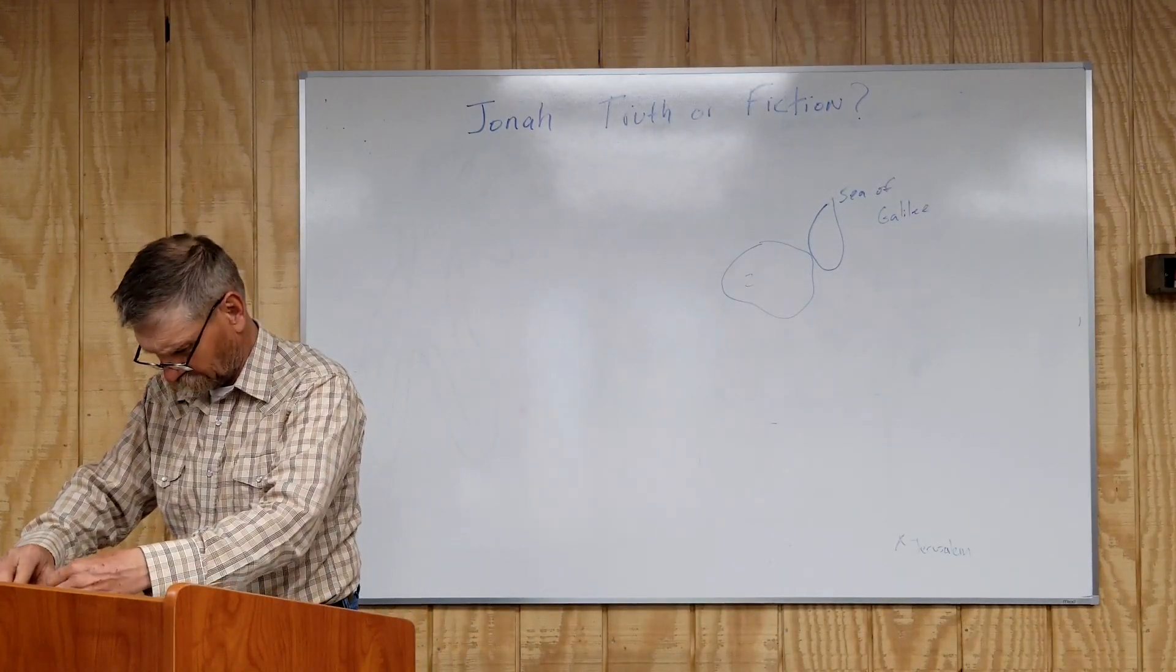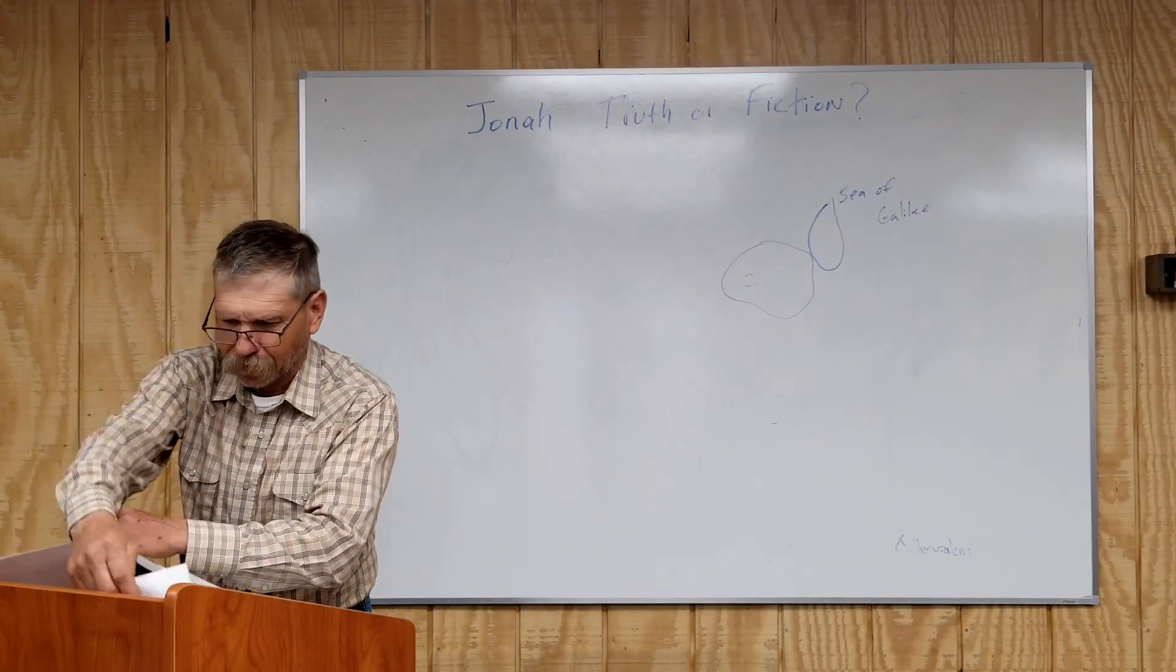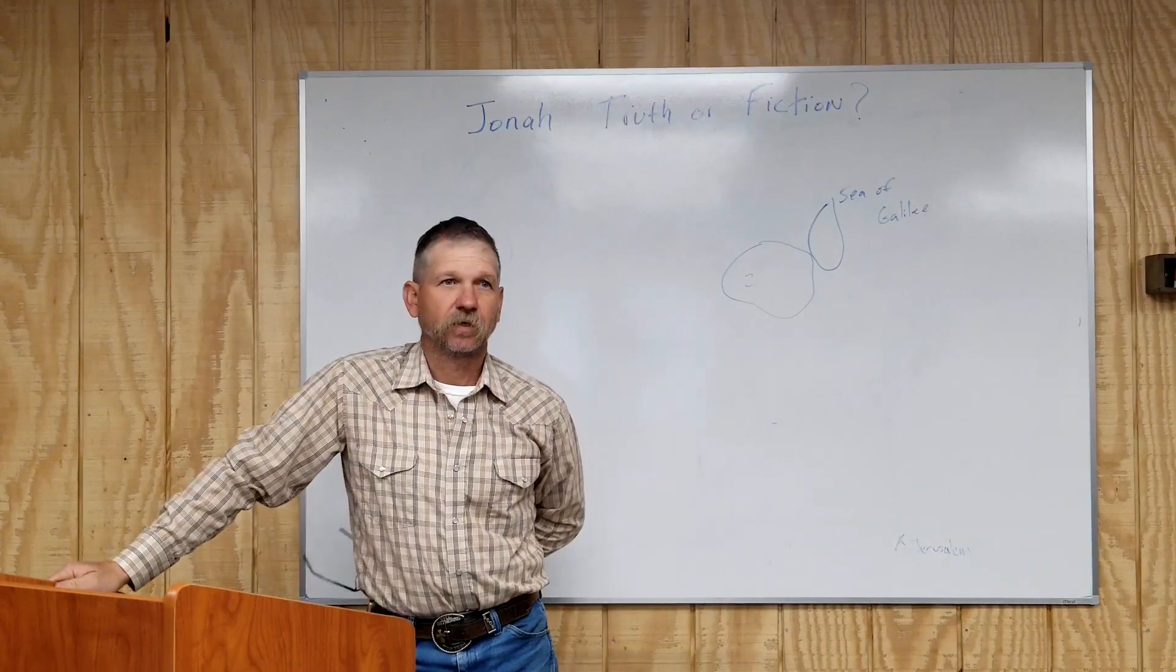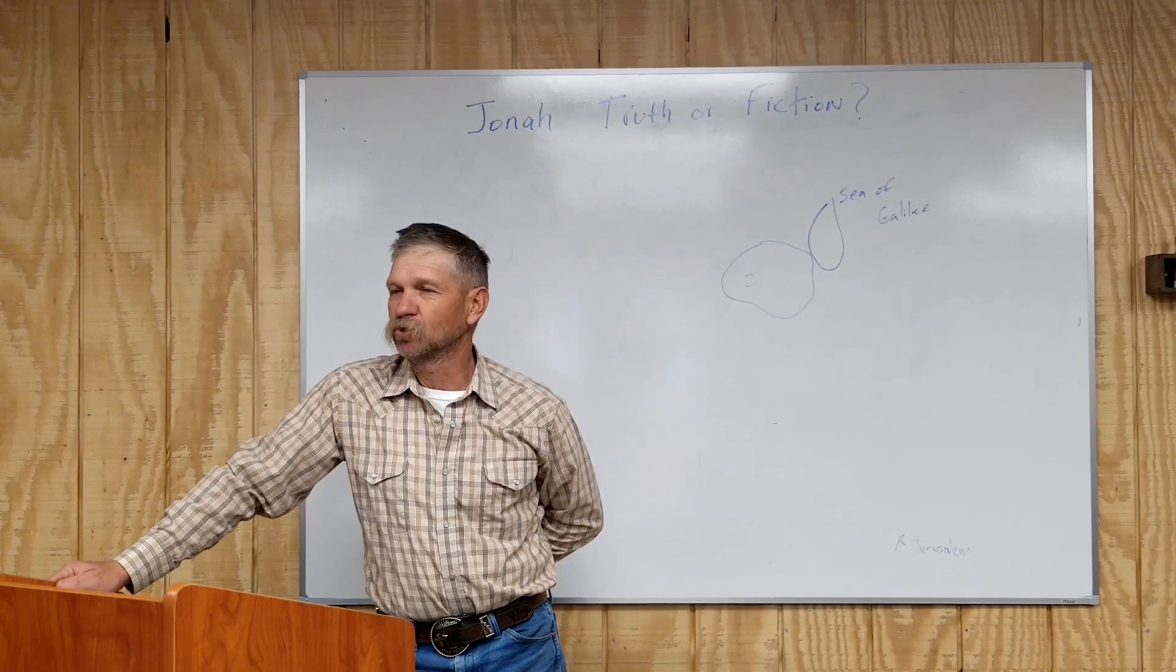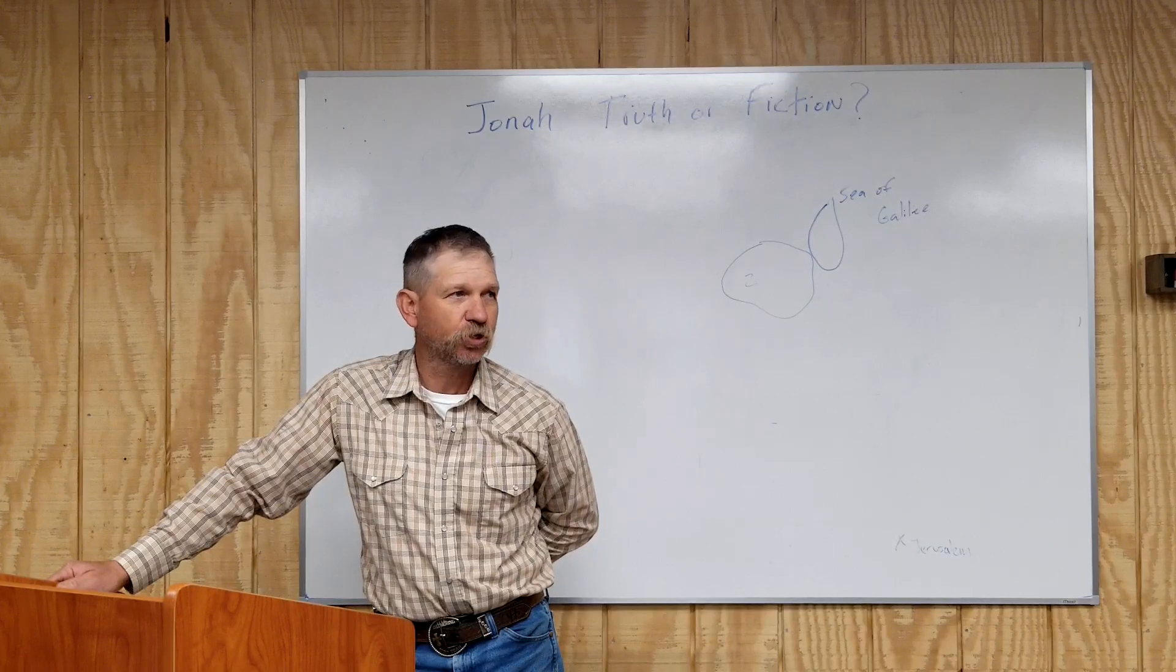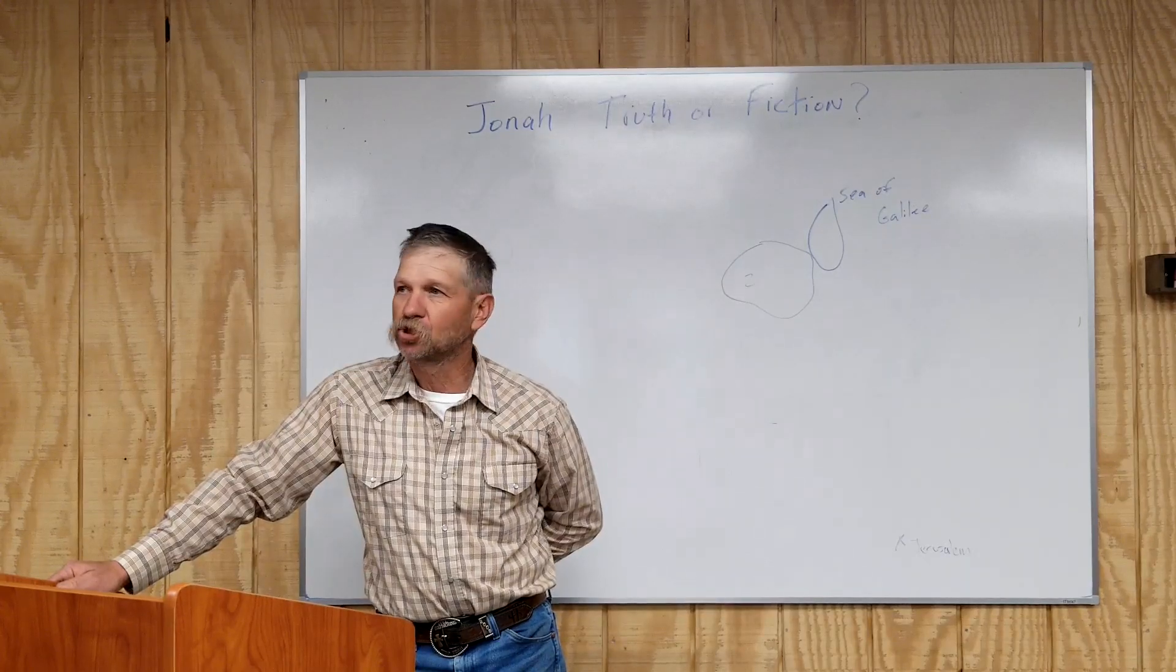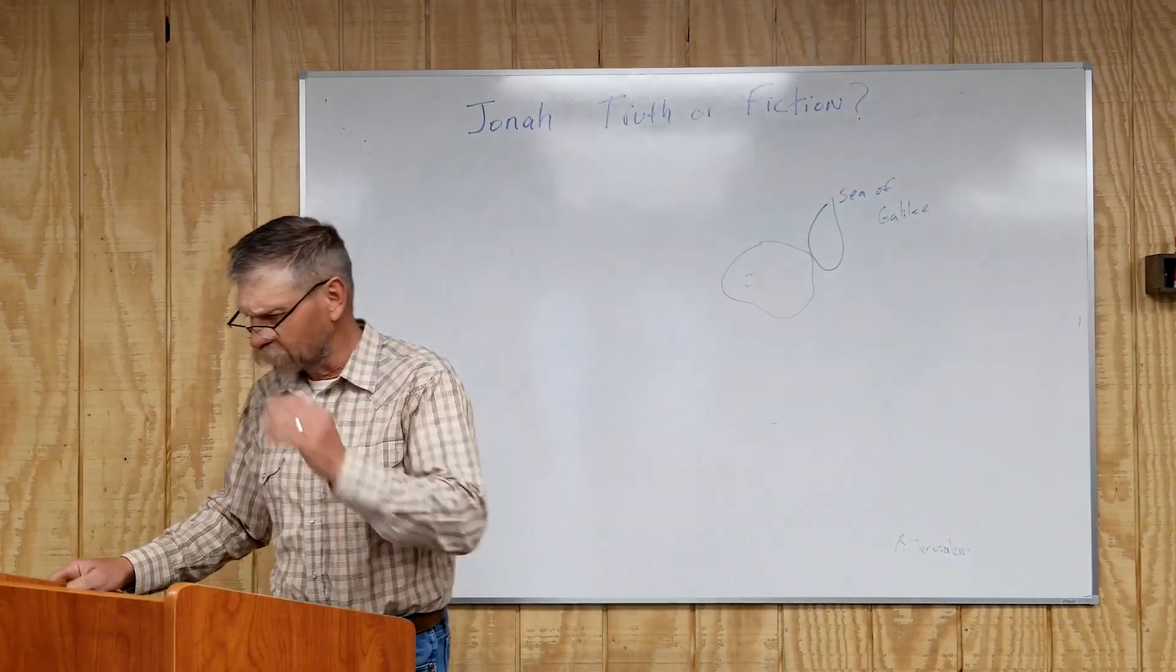And what does that tell us about God? Somebody read Psalm 86:5. For you, Lord, are good and ready to forgive and abundant in mercy for all those who call upon you. You talk about grace, man. Whenever we find out what these Assyrians are like, and we're going to find out how much grace God really has. Because what he could have done, and in many people's eyes, and in Jonah's eyes, should have done, is just wiped them out. Based on what they have done and what they are doing. God should have wiped them out. But he didn't. He sent them a preacher.